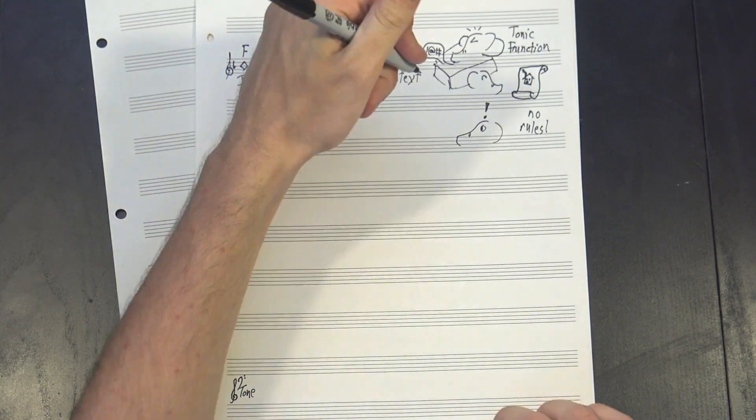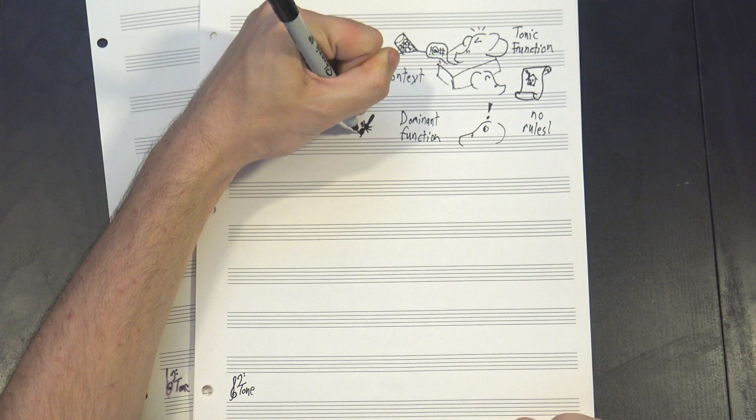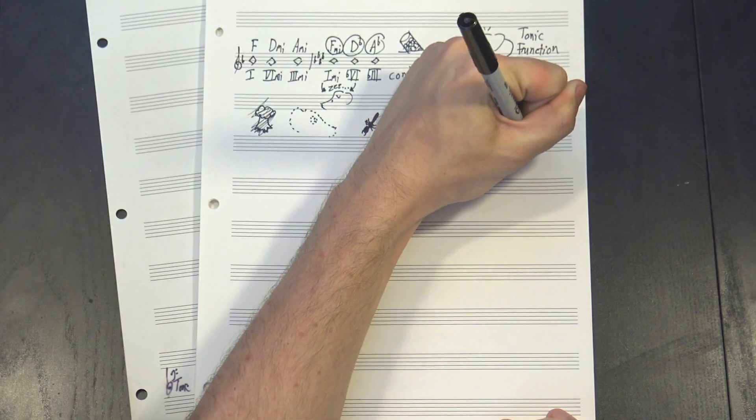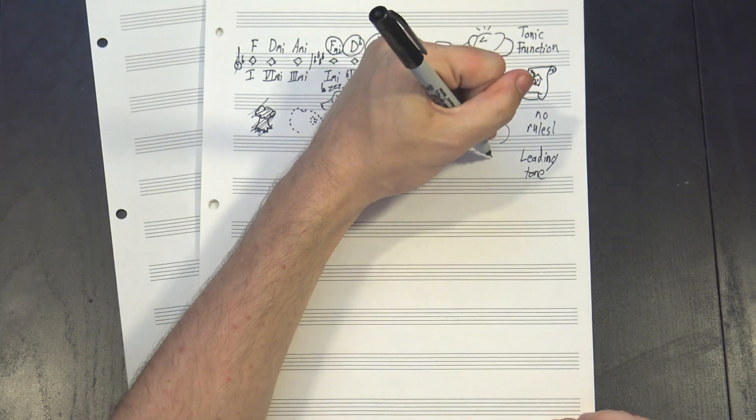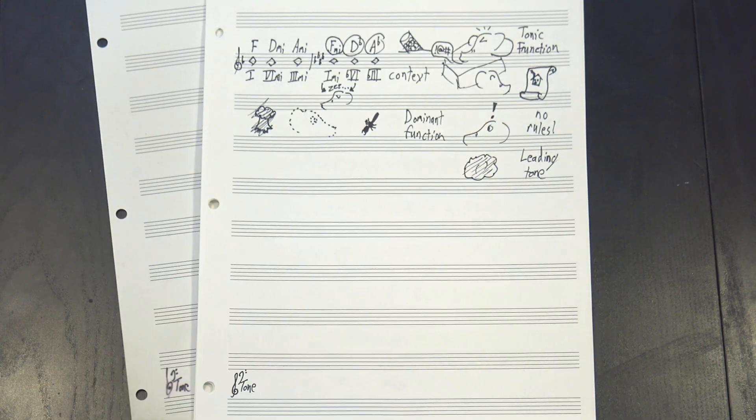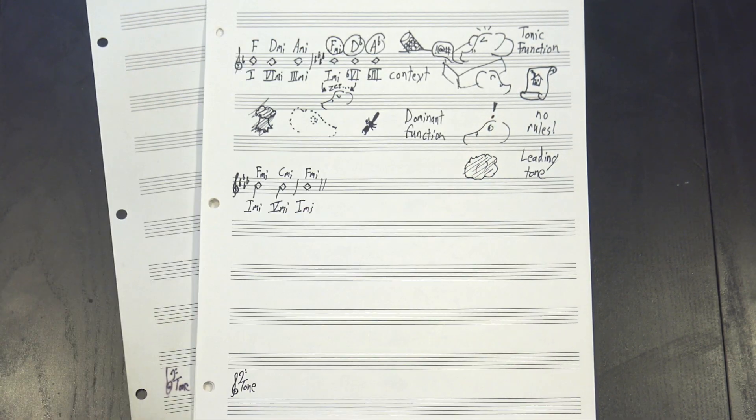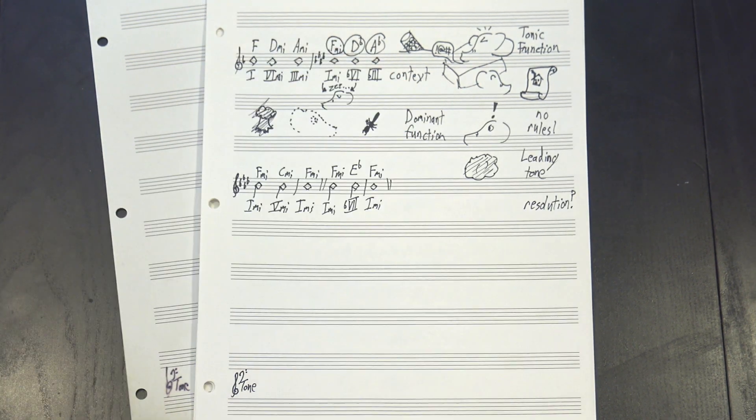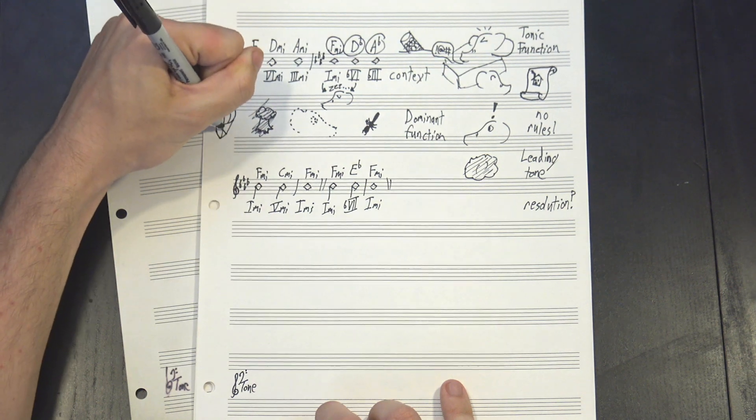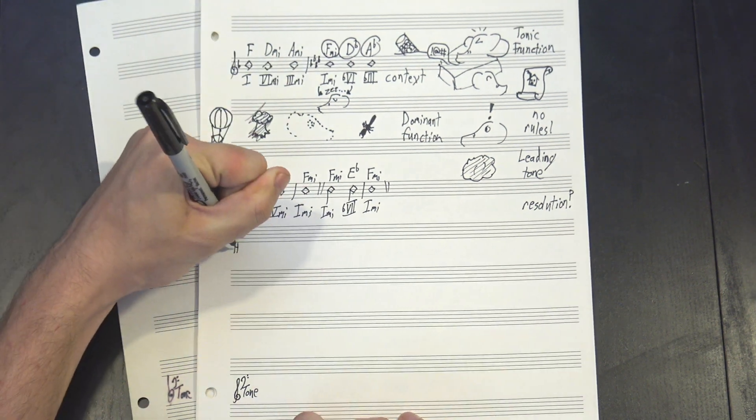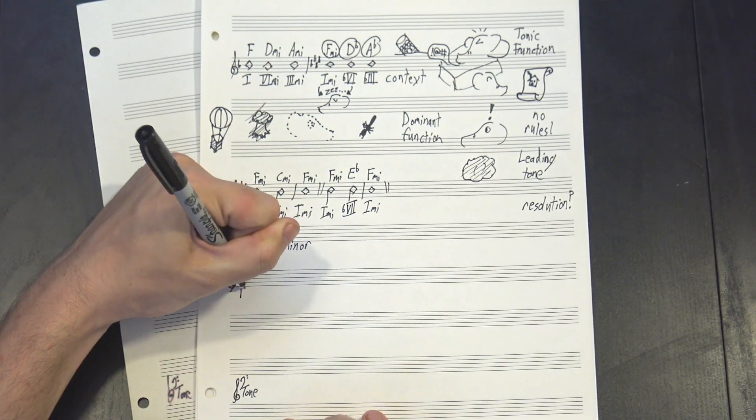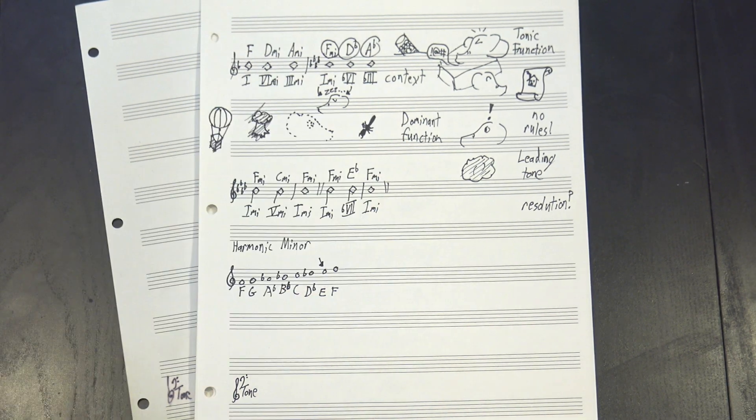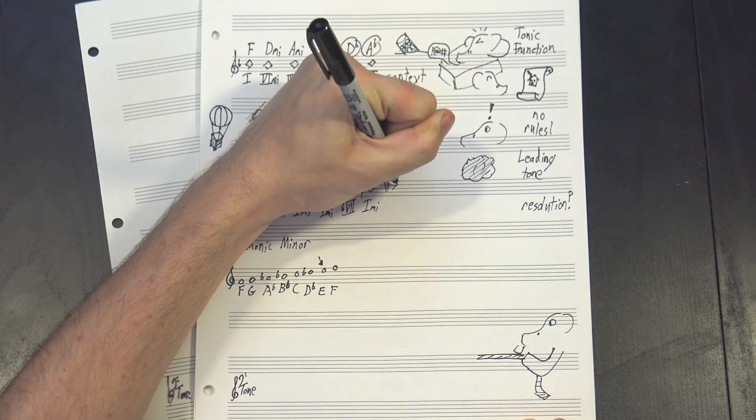But if that seems bad, wait till you hear what happens to dominant function. Or rather, what doesn't happen, because dominant function just kinda doesn't exist in minor. It needs a leading tone in order to function, so if you take that away, it just disappears. Here, check this out. Doesn't sound like a resolution, does it? You can kinda ring one out of the bVII chord, but really, if you want dominant, you need to bring back the leading tone. That's why musicians often use what's called harmonic minor, which is just like minor except that we've raised the seventh back up. This gives us the pull we need to make dominant resolutions work.